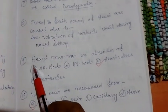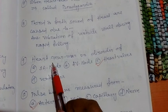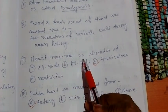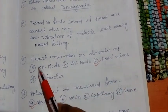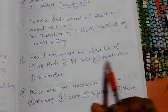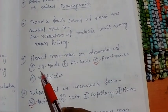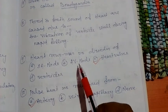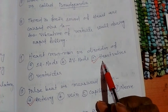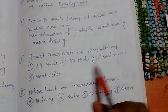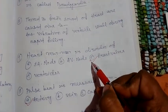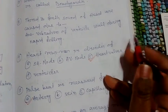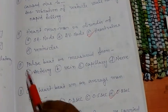Question number 9: heart murmur is a disorder of — there are four options: SA node, AV node, heart valves, and ventricles. The right option is heart valves.